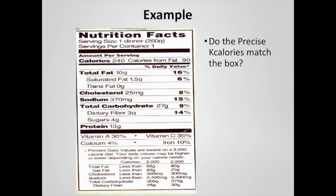Another example: do the precise kilocalories listed match the nutrient labeling? It says 240 calories in this food, with 10 grams of total fat, 27 grams of total carbohydrates, and 13 grams of protein. So 10×9 + 27×4 + 13×4 = 250 calories — meaning these people have under-reported the number of calories in their food.